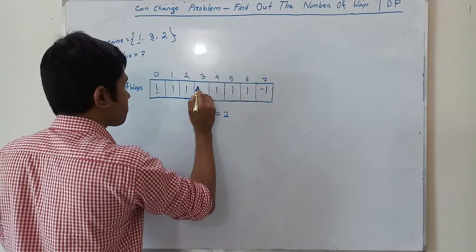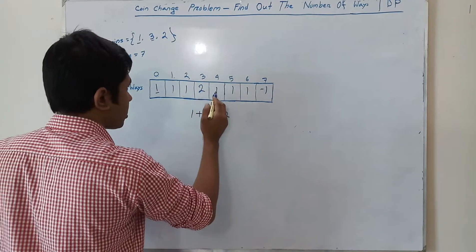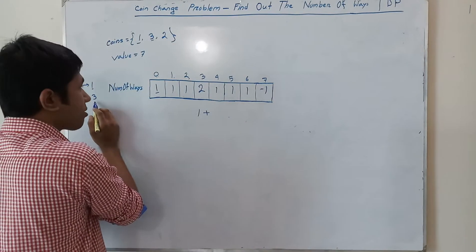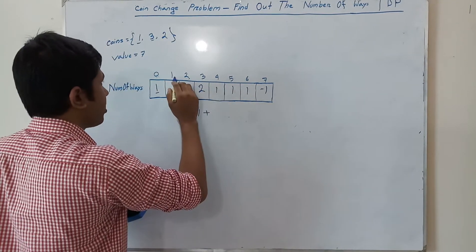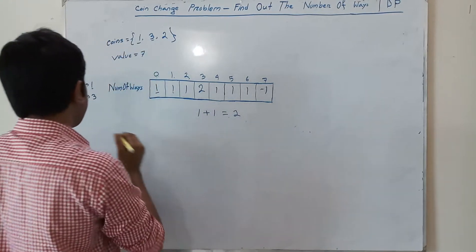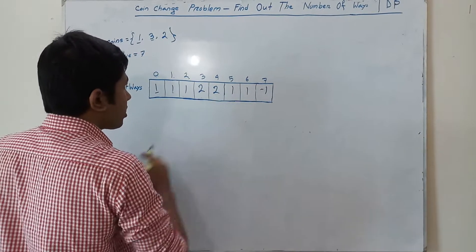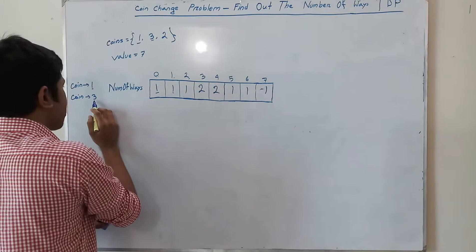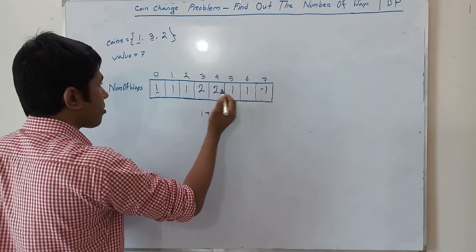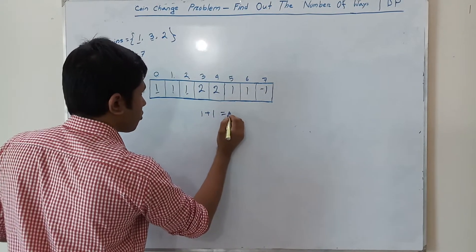We put 2 here. When the value is 4, the existing number of ways is 1, plus by using coin 3 the ways for 4 minus 3 equals 1 is 1. So the total is 2 — by using coins 1 and 3. When value is 5, existing ways is 1, plus ways for 5 minus 3 equals 2, which is 1. Total is 2.